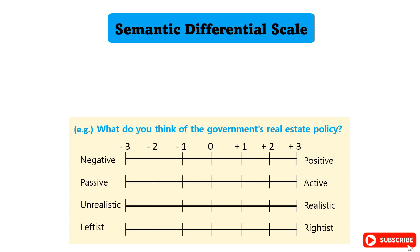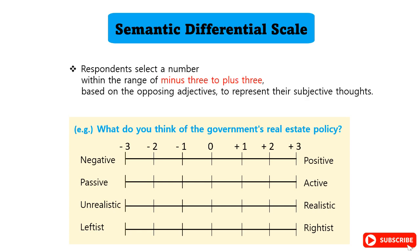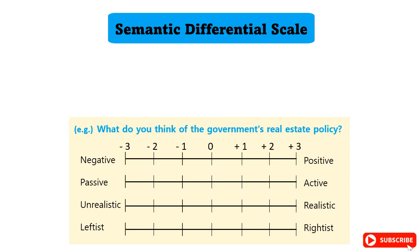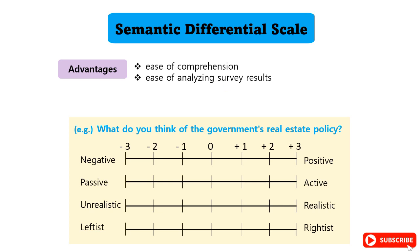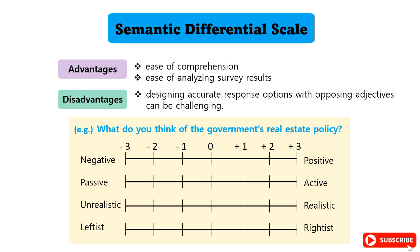To further explain the Semantic Differential Scale, respondents select a number within the range of minus three to plus three, based on the opposing adjectives, to represent their subjective thoughts. Its advantages lie in its ease of comprehension and the ease of analyzing survey results. However, a disadvantage is that designing accurate response options with opposing adjectives can be challenging.